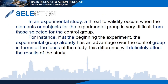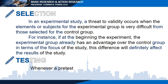Then we have selection bias — a threat to internal validity where the groups were not comparable before the study. This is called the selection threat: any factor other than the program that leads to post-test differences between groups. In non-experimental study, a threat of validity occurs when subjects for the experimental group are very different from those selected for the control group. For instance, if at the beginning of the experiment the experimental group already has an advantage over the control group in terms of the focus of the study, this difference will definitely affect the result.